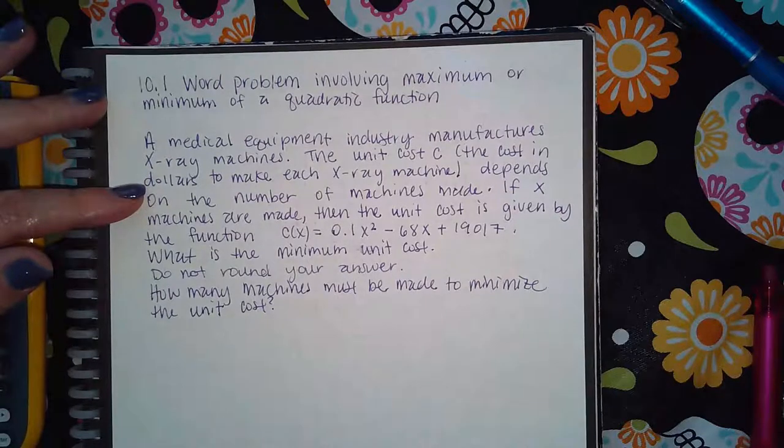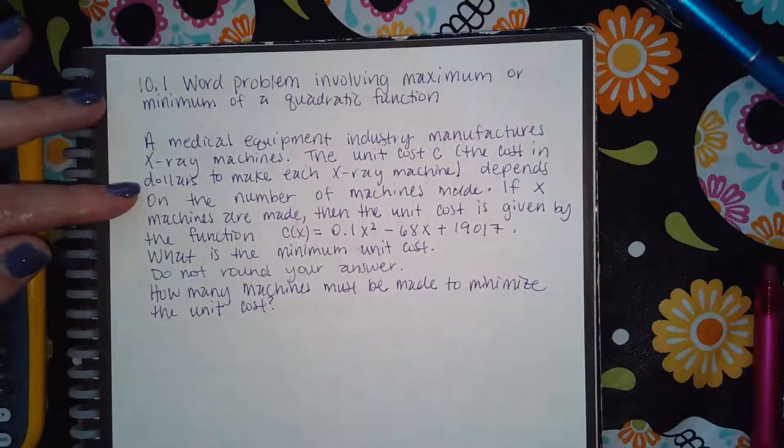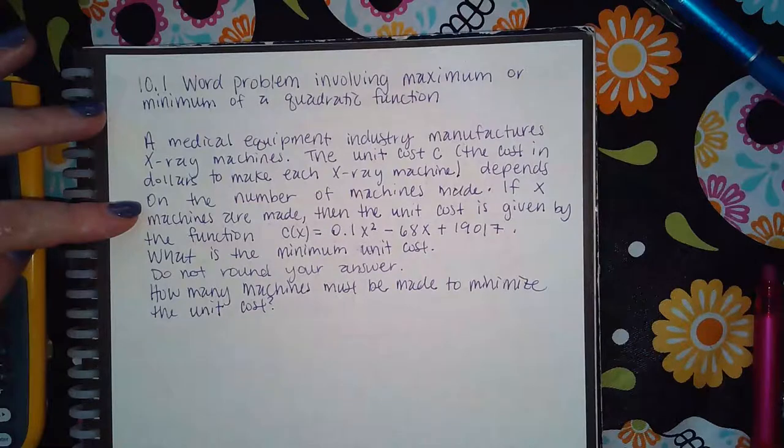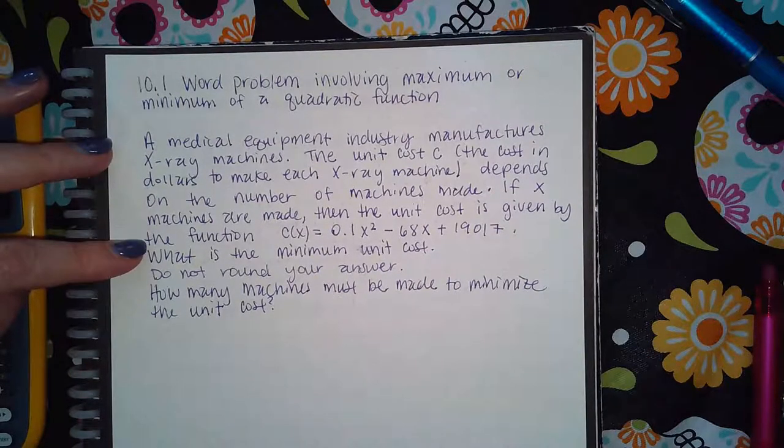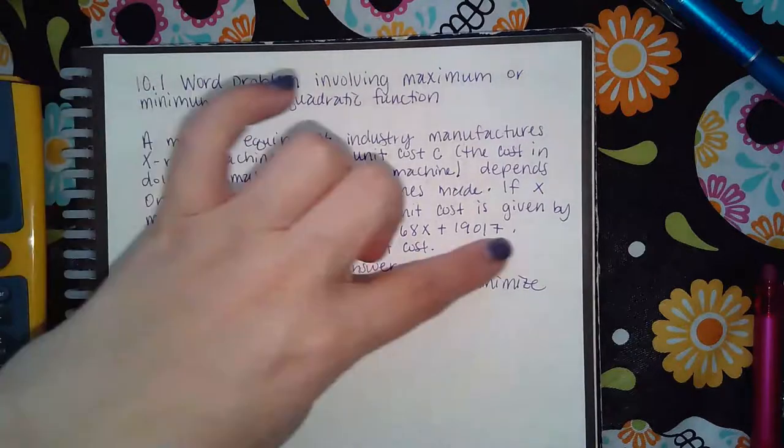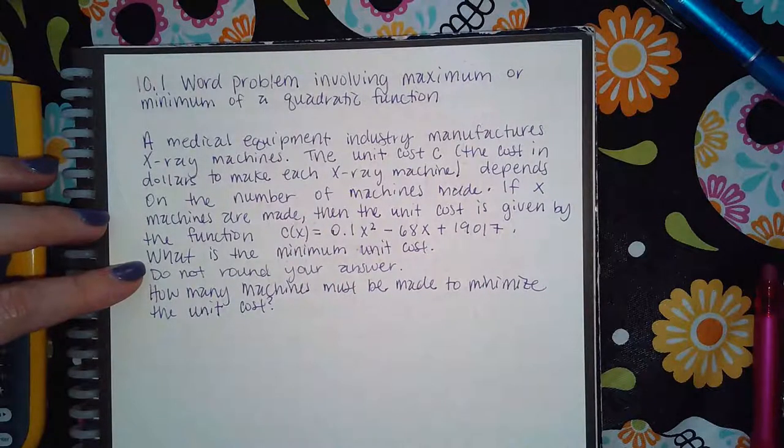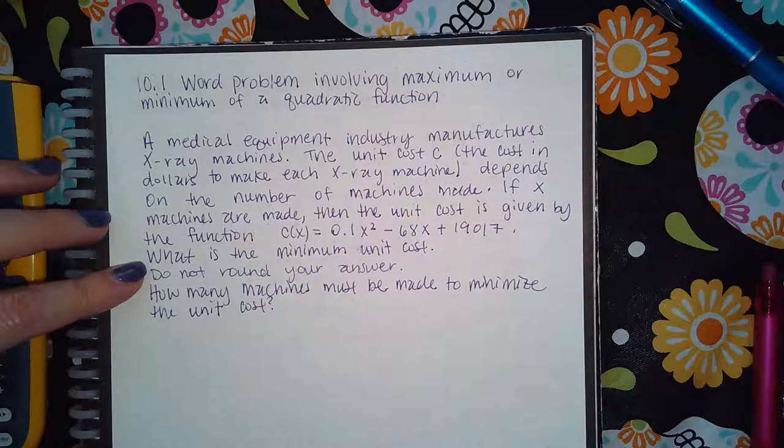The unit cost C, the cost in dollars to make each x-ray machine, depends on the number of machines made. If x machines are made, then the unit cost is given by the function C(x) = 0.1x² - 68x + 19,017.